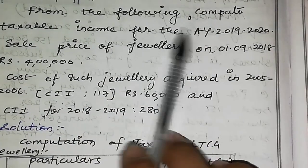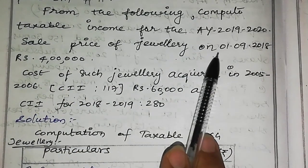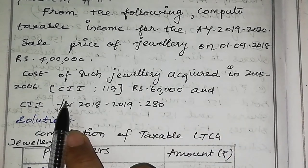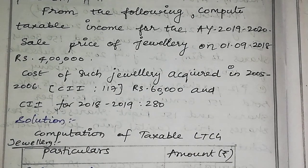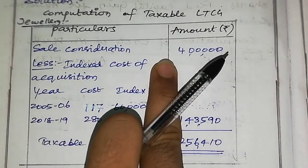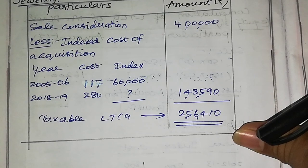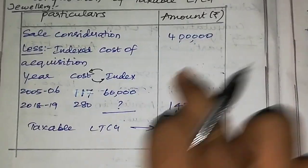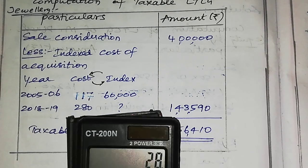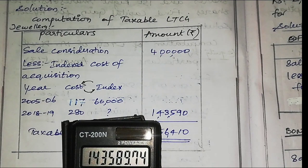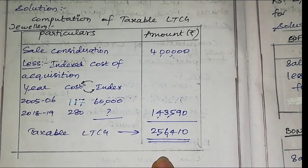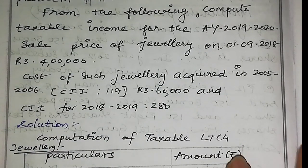Next problem: compute taxable income for assessment year 2019-20. Sale price of jewelry on 1st September 2018 is Rs. 4 lakhs. Cost of such jewelry was acquired in 2005-06 for Rs. 60,000. Sale consideration is Rs. 4 lakhs. Indexed cost of acquisition: Cost Inflation Index for 2005-06 is 117 and for 2018-19 is 280. So 60,000 multiplied by 280 divided by 117 gives approximately Rs. 1,43,590. Taxable long-term capital gain is Rs. 4,00,000 minus Rs. 1,43,590, approximately Rs. 2,56,410.